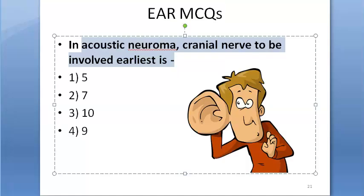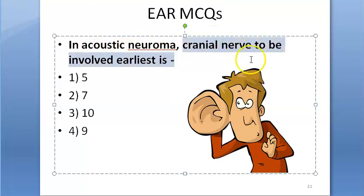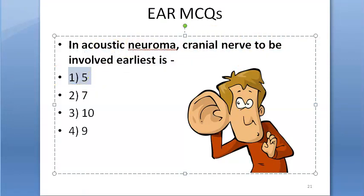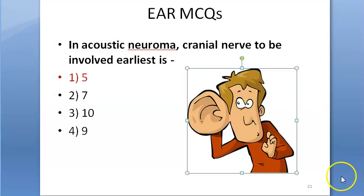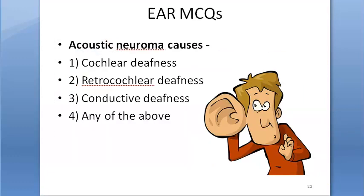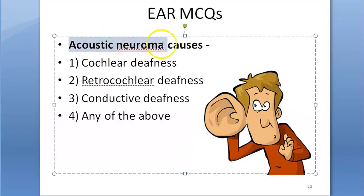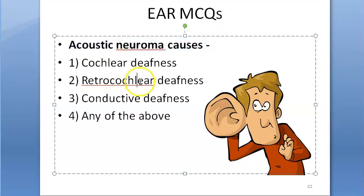In acoustic neuroma, which cranial nerve is involved earliest? The answer is A — the fifth cranial nerve, the trigeminal.